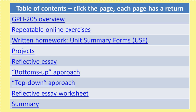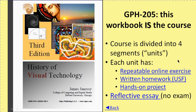This is a table of contents of the pages we're going to be taking a look at — just a bit of an overview. GPH 205, Historical Foundations of Visual Technology, requires two books: The Story of Art and this workbook. This workbook is the course. It takes the place of a learning management system in getting you to navigate to the web resources for this entirely online course. The course is divided into four segments — I call them units.